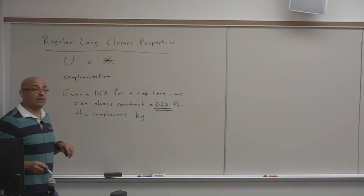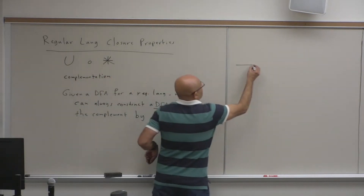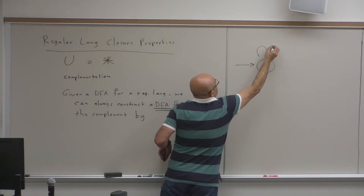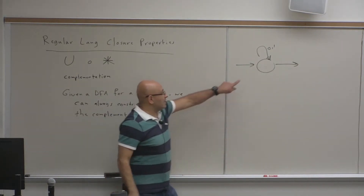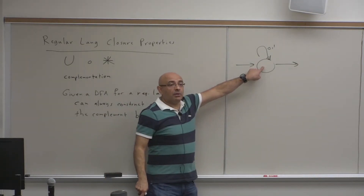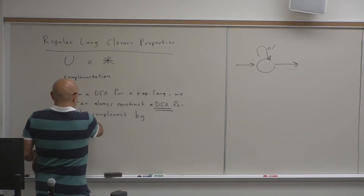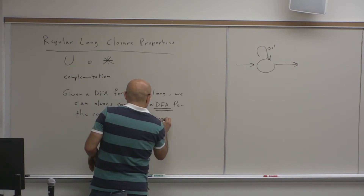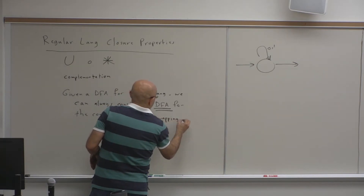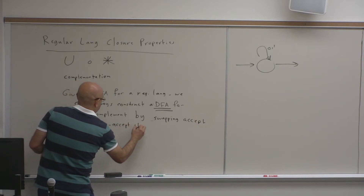It has to be a DFA. We showed an example of why it doesn't work for NFAs — if you have a start state that has transitions on 0 and 1, and whatever comes after that, if you change this to an accept state, you'll always accept everything. The complement is constructed by swapping accept and non-accept states.